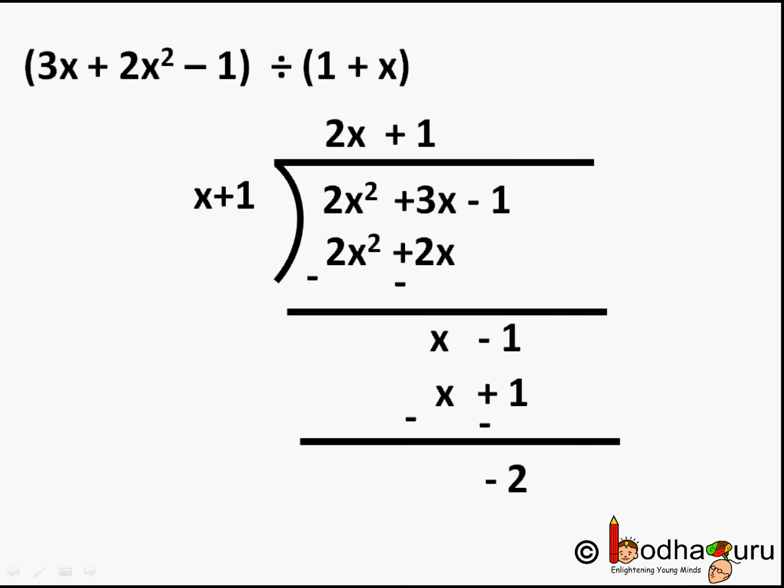But it has no x, means the power of x is 0, whereas in the divisor x + 1, the highest power is 1. So the highest power in the leftover dividend is 0, which is lesser than the highest power of divisor, which is 1. This means division ends here. So whenever the degree of the new dividend is lesser than the degree of divisor, we stop. That is, it is end of division.